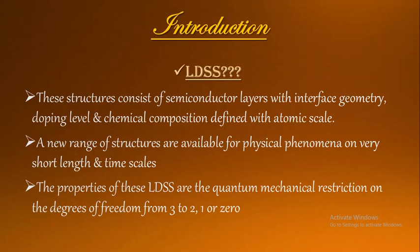But in these low dimensional structures there will be some restriction put on these degrees of freedom. If you are having a three-dimensional semiconductor, you may put a restriction on the movement of the electron or hole - in general, the carrier - along any one direction. So degrees of freedom will reduce from 3 to 2. If you put restriction in another direction also, then the degree of freedom is reduced to 1. And if you confine or put restriction in yet another direction, then the degree of freedom of that system equals 0.